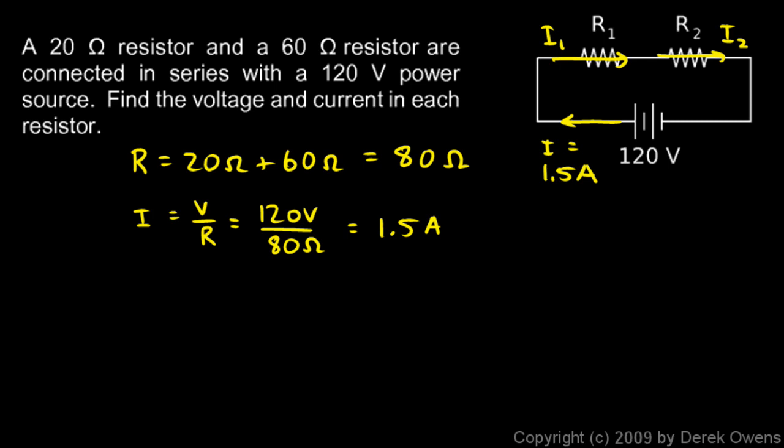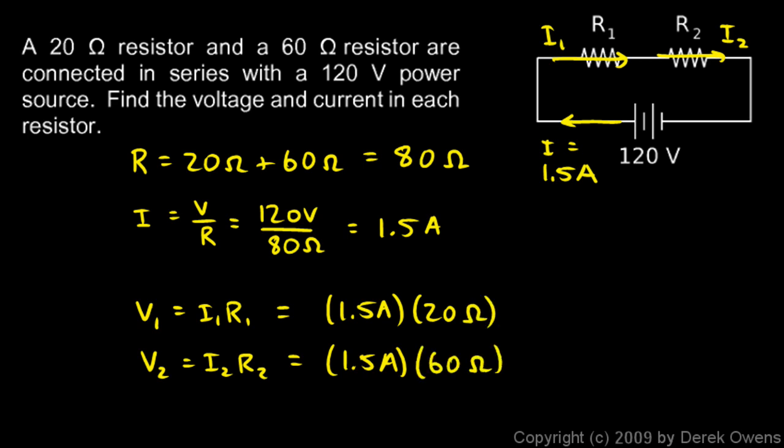Because in series the current has to be the same. Every electron that comes out of the battery also goes through R1 and R2. I can use that fact to find V1 and V2. V1 will be I1 R1 and V2 will be I2 R2. I in each case is this 1.5 amps. And in each case we multiply by the resistance. So this first one is 20 ohms, and then the second one was 60 ohms. When we do 1.5 times 20 we get 30 volts. And 1.5 amps times 60 ohms is 90 volts.